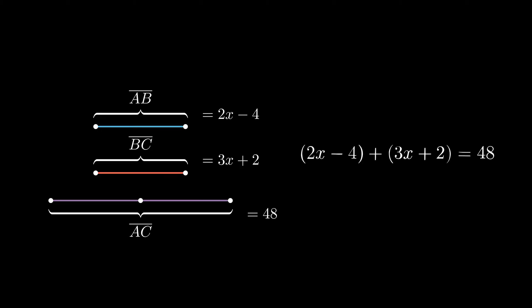We can combine like terms to get 5x minus 2 equals 48. Now, we isolate our variable x by adding 2 on both sides to get 5x equals 50. And finally, we can divide both sides by 5 to get x equals 10.